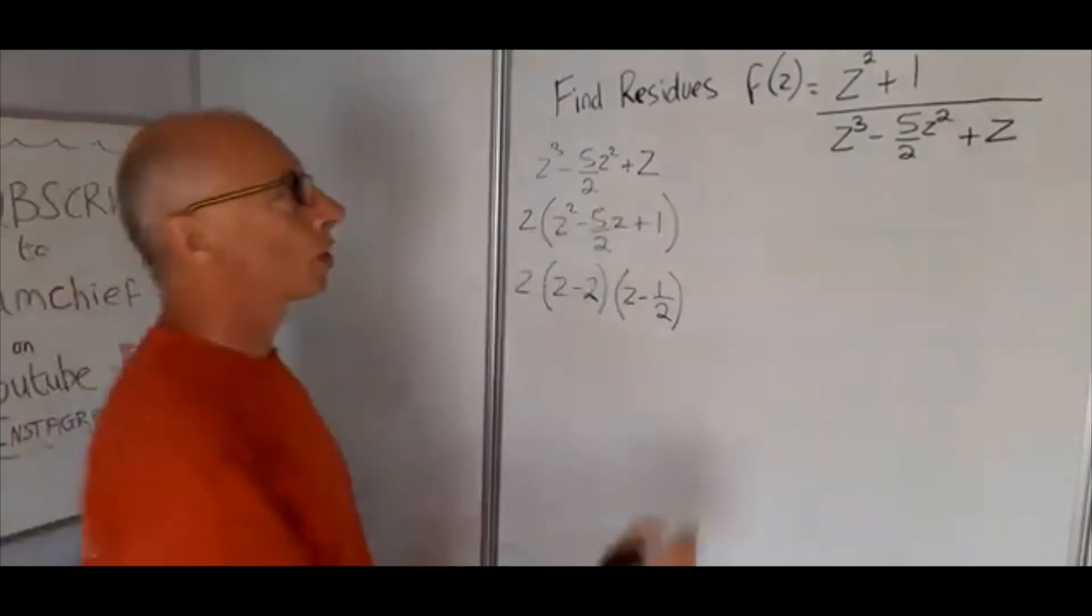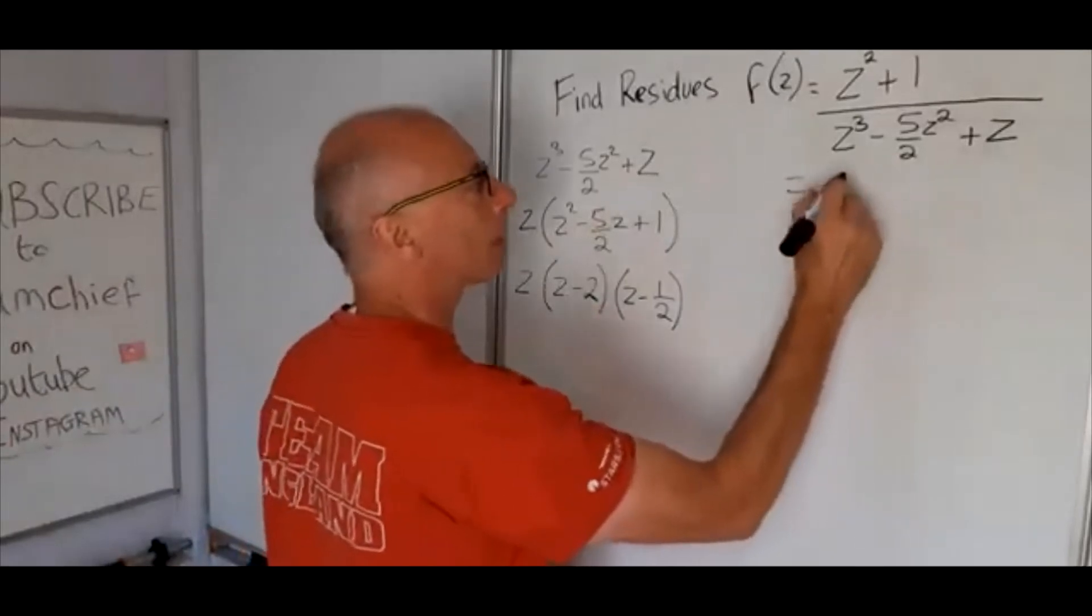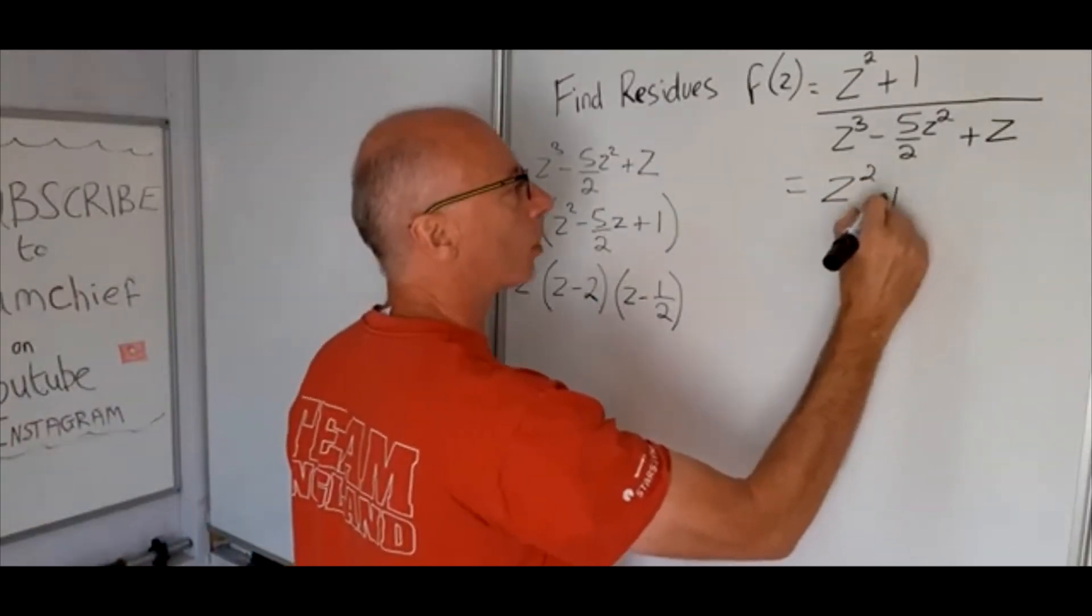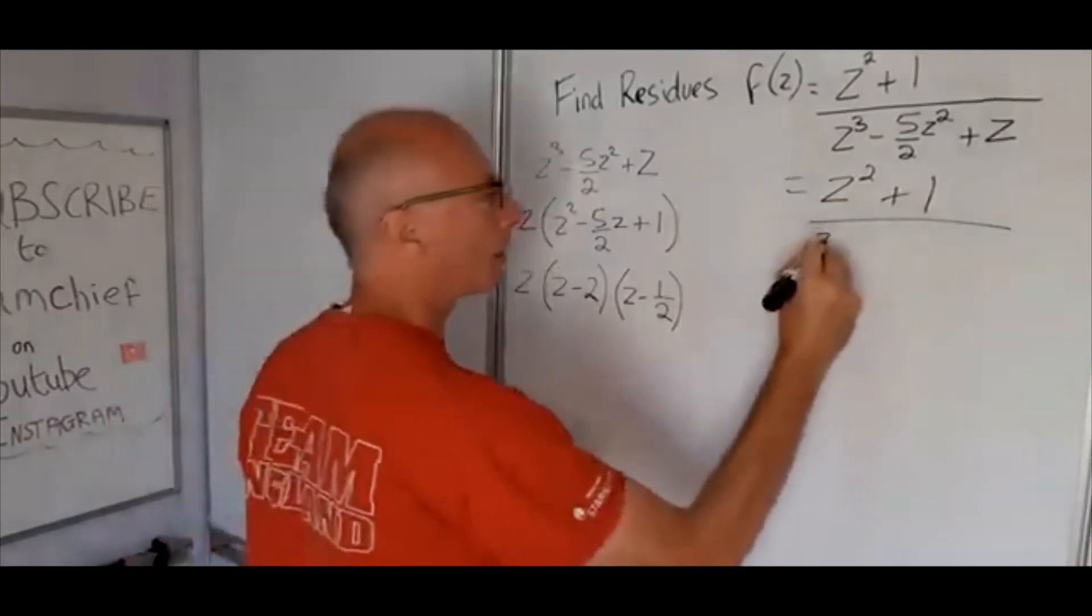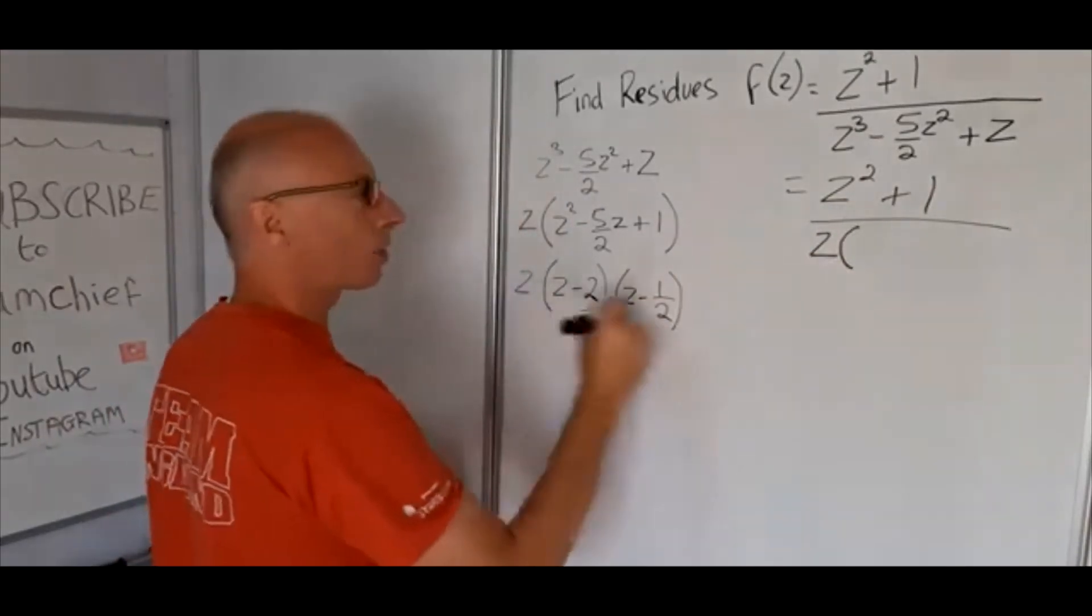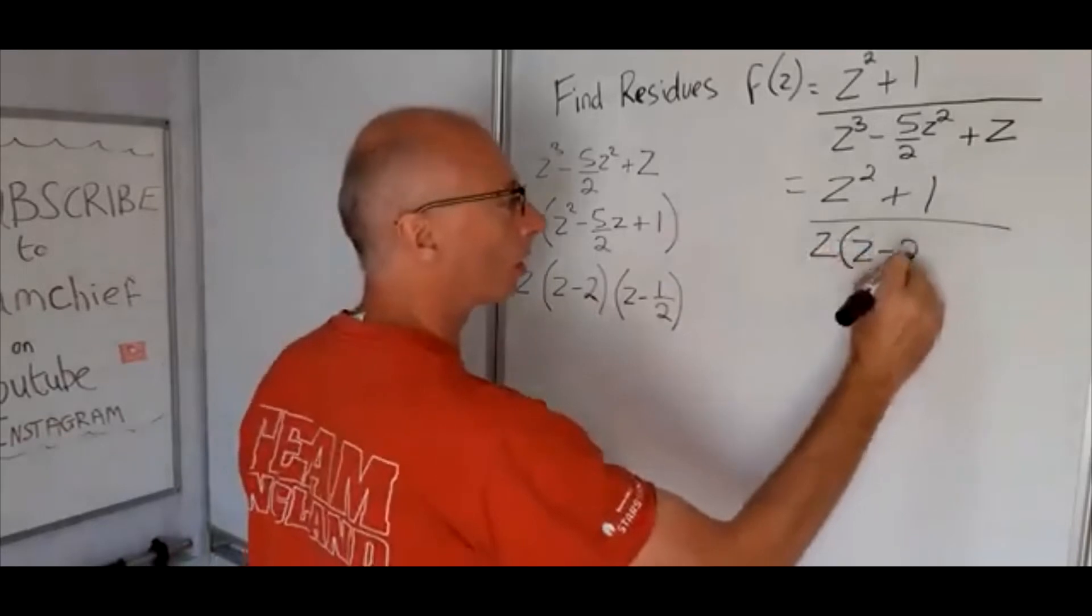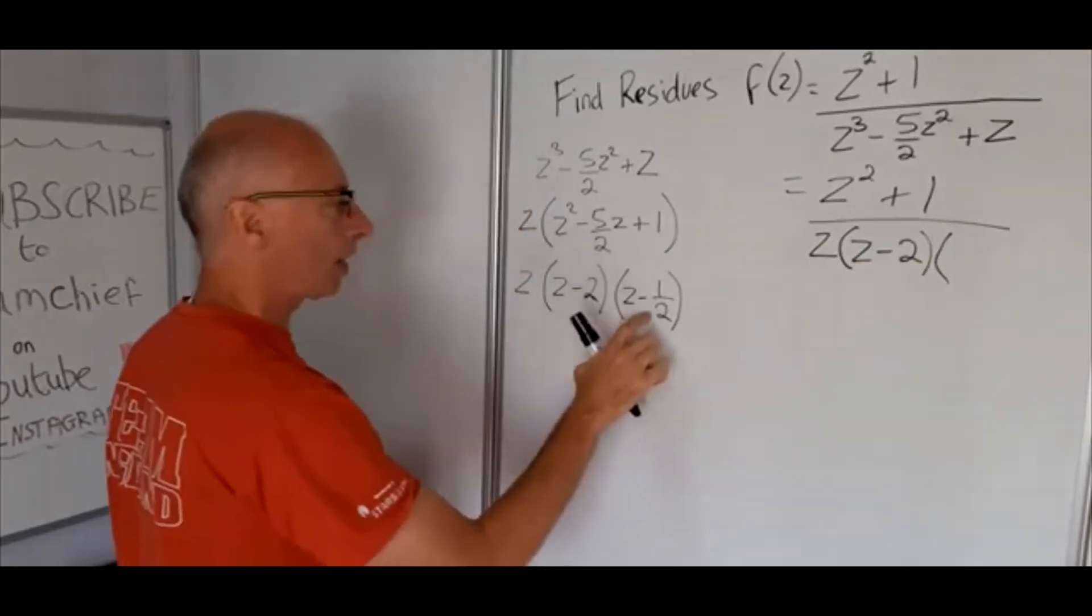So now we can rewrite this function here as z squared plus 1 divided by z, z minus 2, and z minus a half.